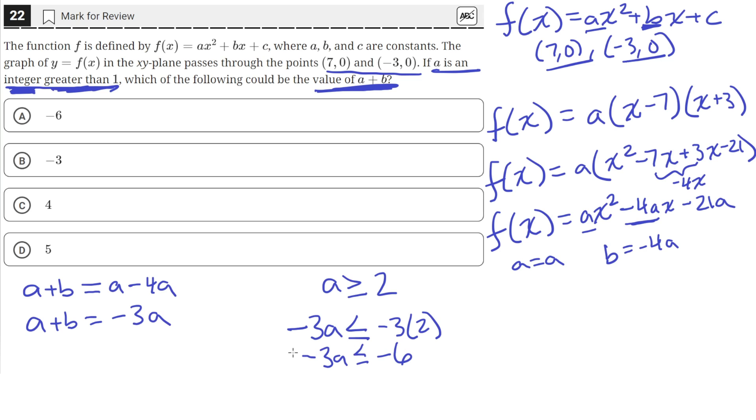So that means negative 3a, which is equal to a + b from this equation that we derived, basically says that a + b has to be less than or equal to negative 6. And the only answer choice in this list that is less than or equal to negative 6 is negative 6. Negative 3 is larger than negative 6, 4 is larger than negative 6, and 5 is larger than negative 6. So A is the correct answer.